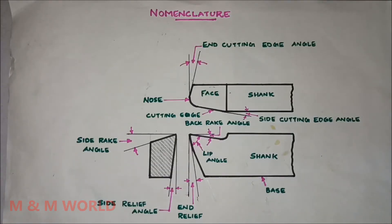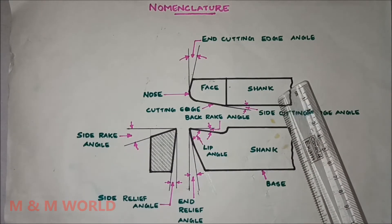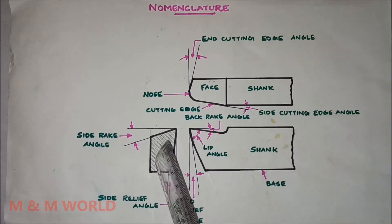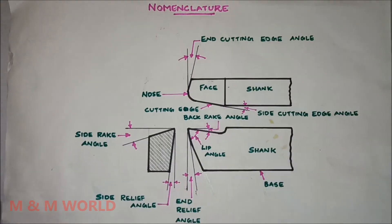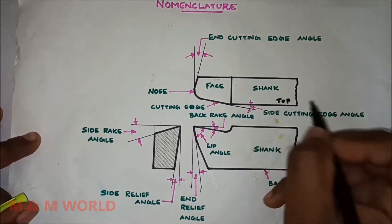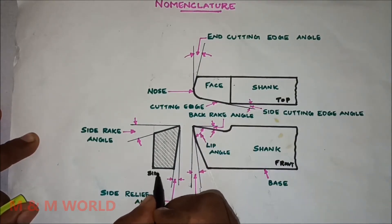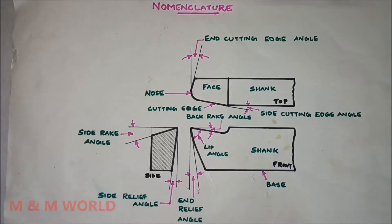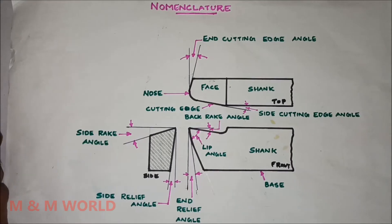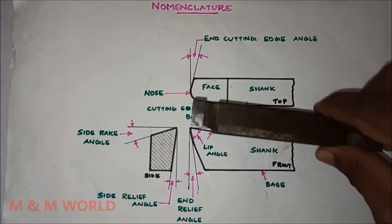This gives the various views — this is the top view, this one is the front view, and this is the side view of a single point cutting tool. Now let us see these tool elements and tool angles in detail.